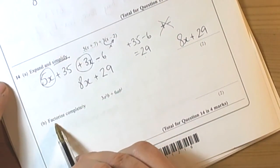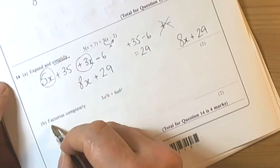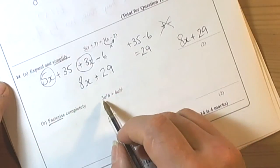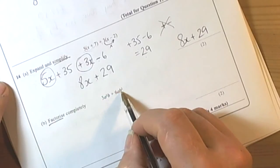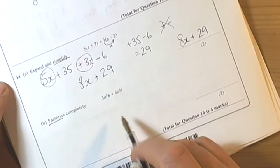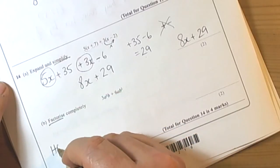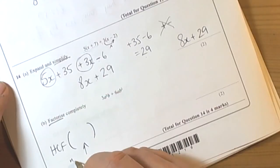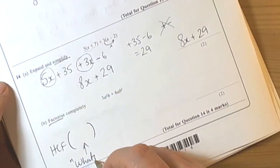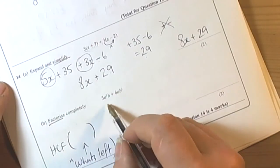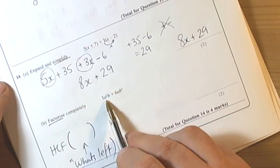This next part asks us to factorize completely. Factorize starts with this word factor, so we're looking for the highest common factor. Factorize also means put an expression into brackets with the highest common factor outside the bracket, and it's basically what's left when you've divided through inside the bracket.